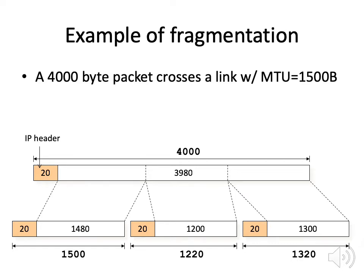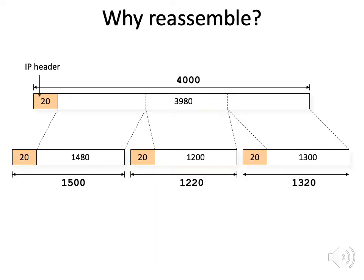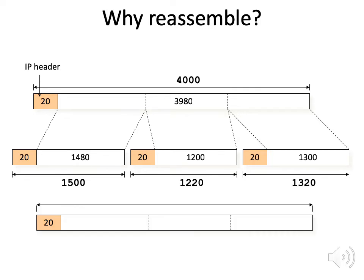Once we send these to the destination, the question is what should the destination do? Should it pass these IP packets up as separate packets to the next level, or should it reassemble them? The reason to reassemble is to think about what the higher level expects — it's expecting an IP packet with a large payload instead of multiple small packets.